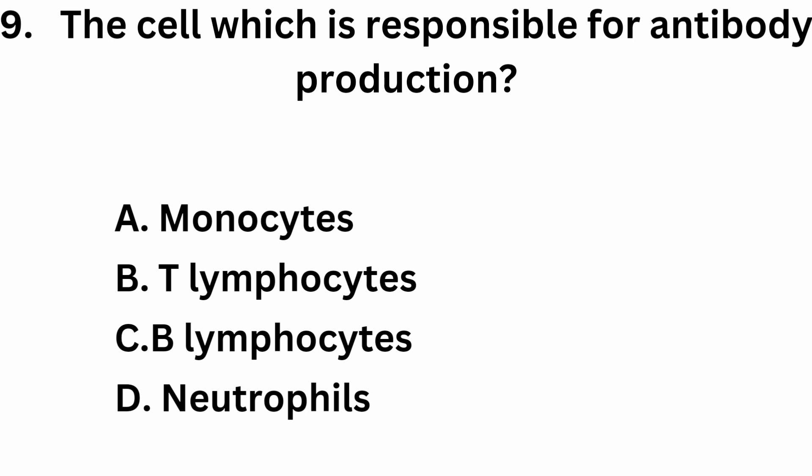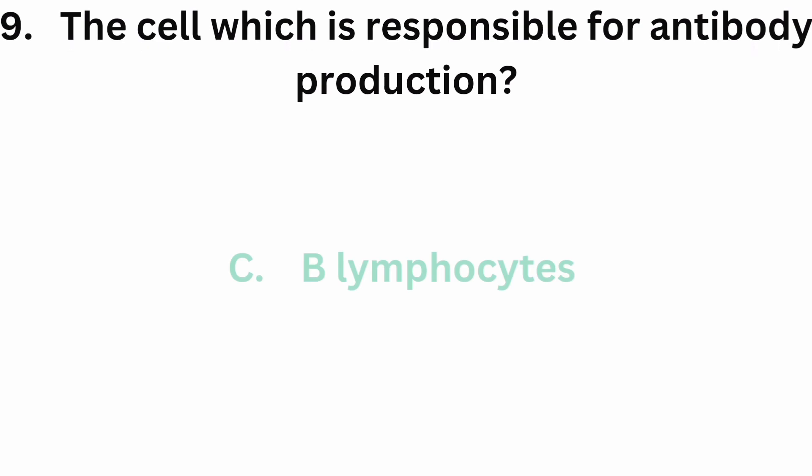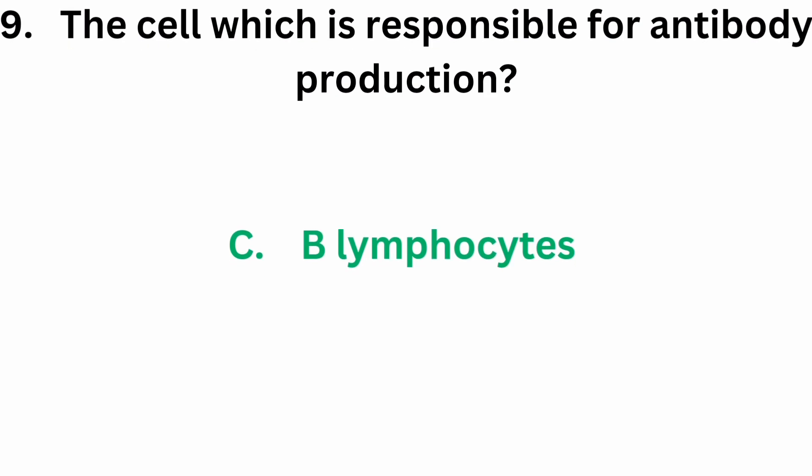Question number 9: the cell which is responsible for antibody production. Option A, monocytes. Option B, T-lymphocytes. Option C, B-lymphocytes. Option D, neutrophils. The correct answer is option C, B-lymphocytes.